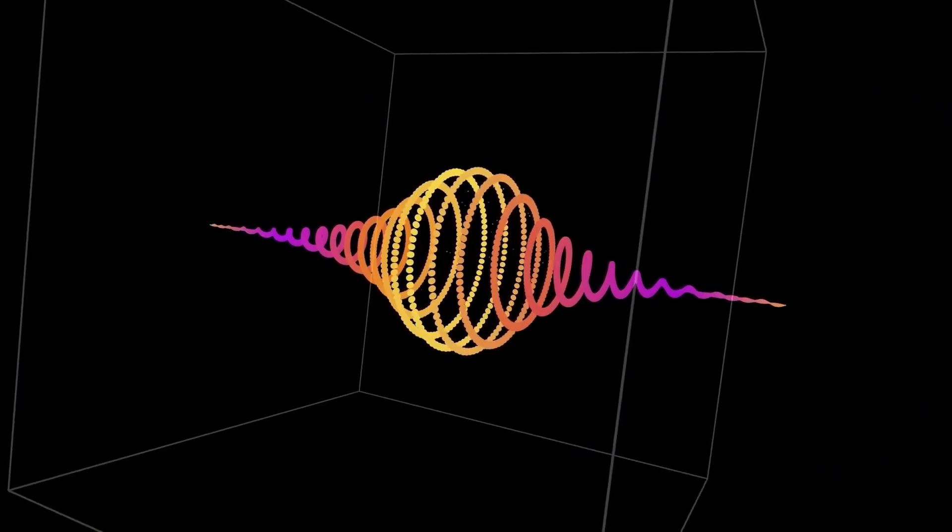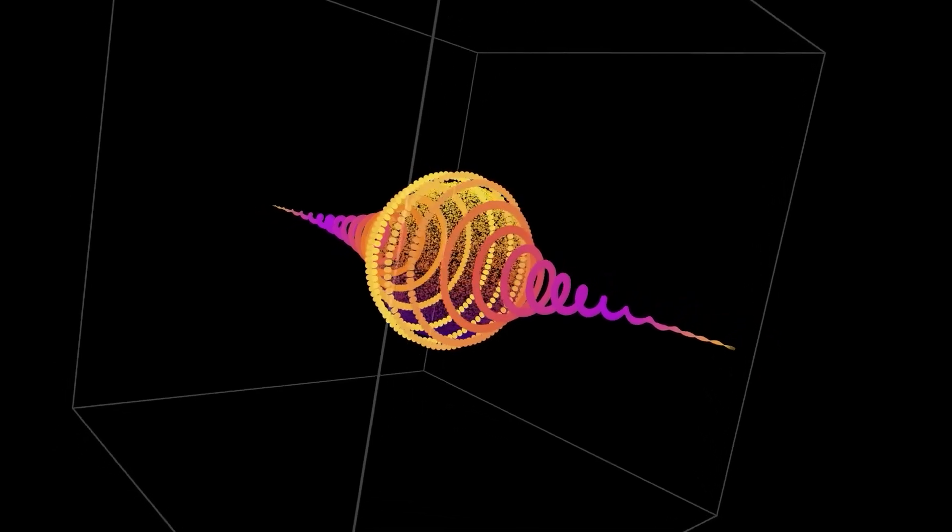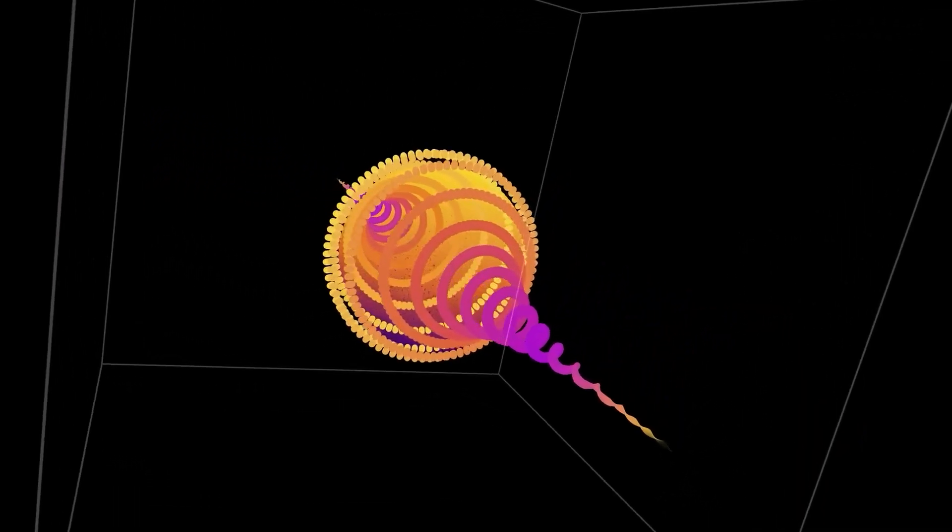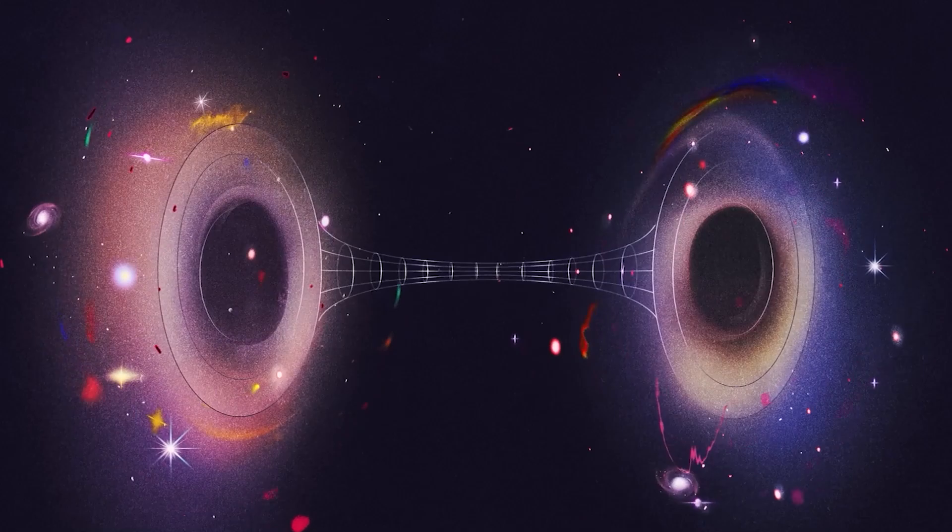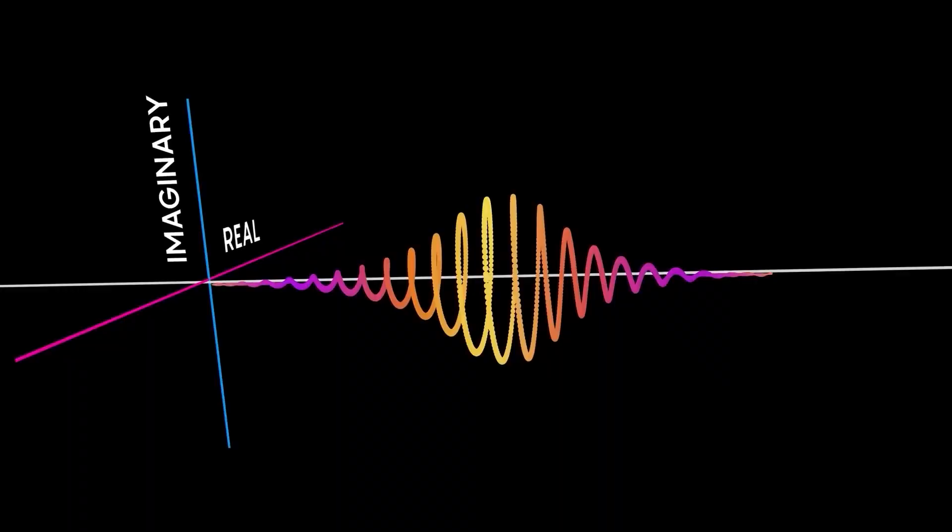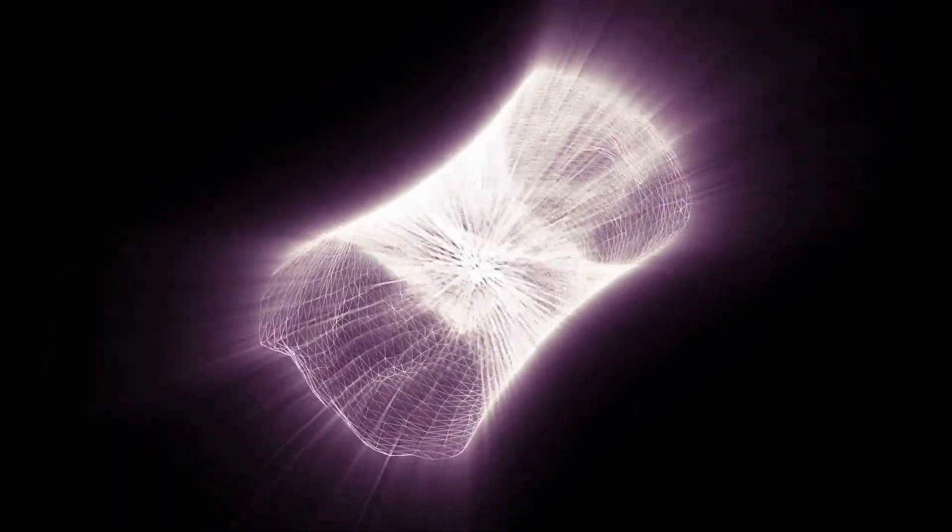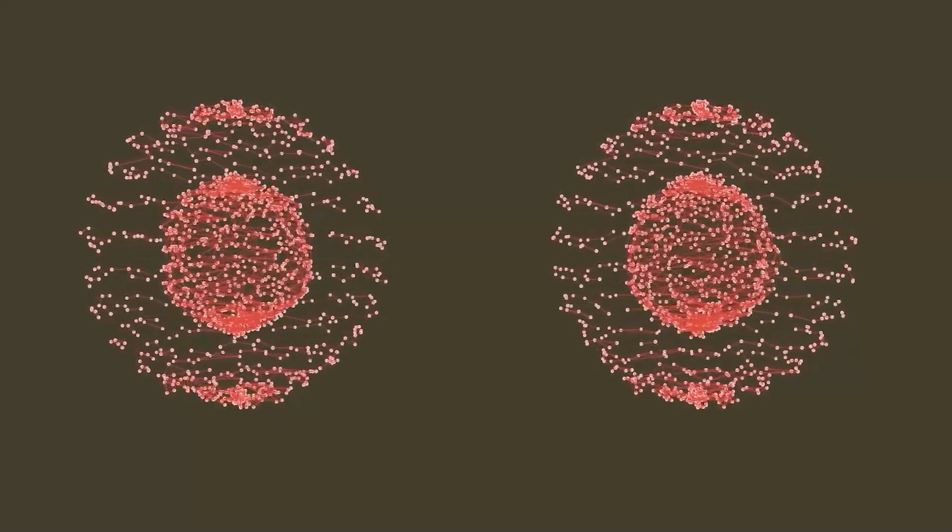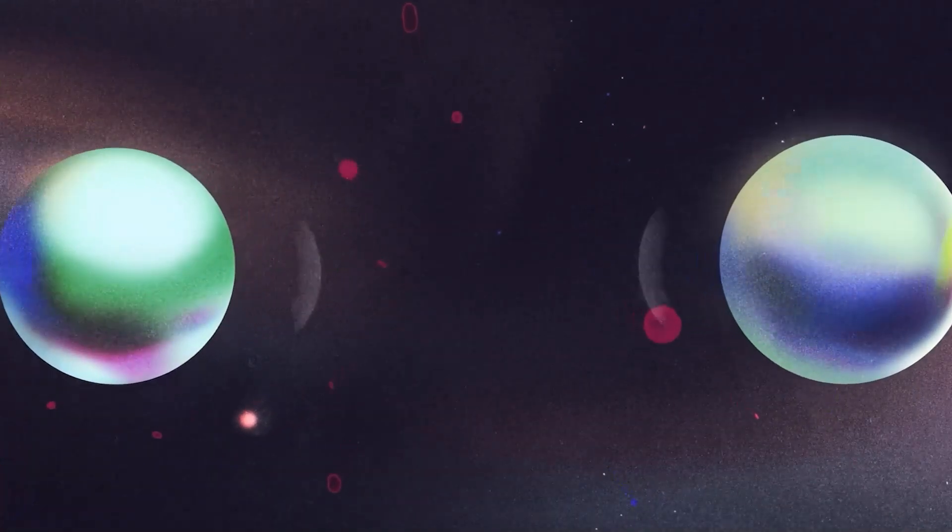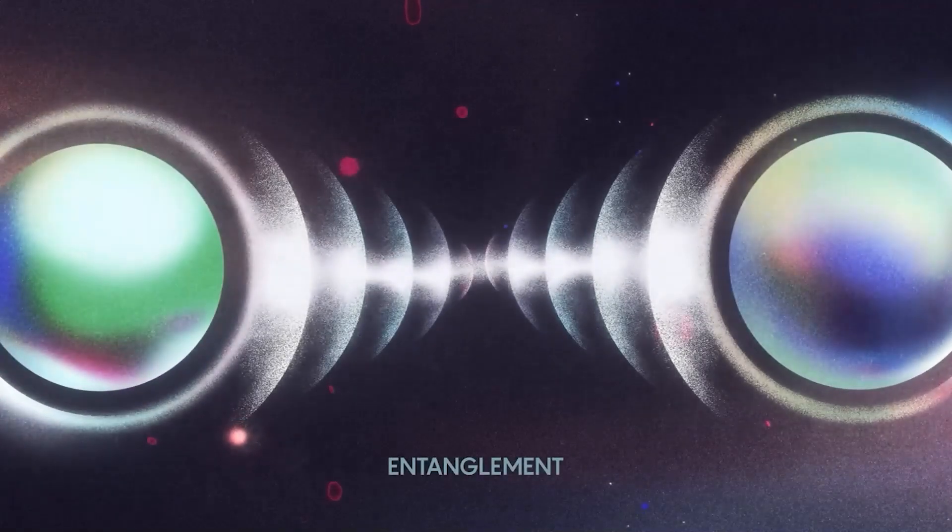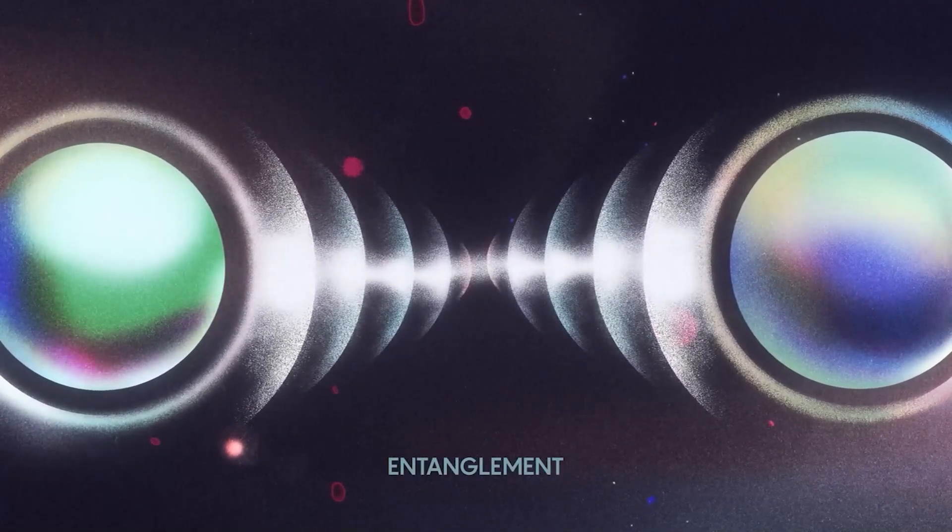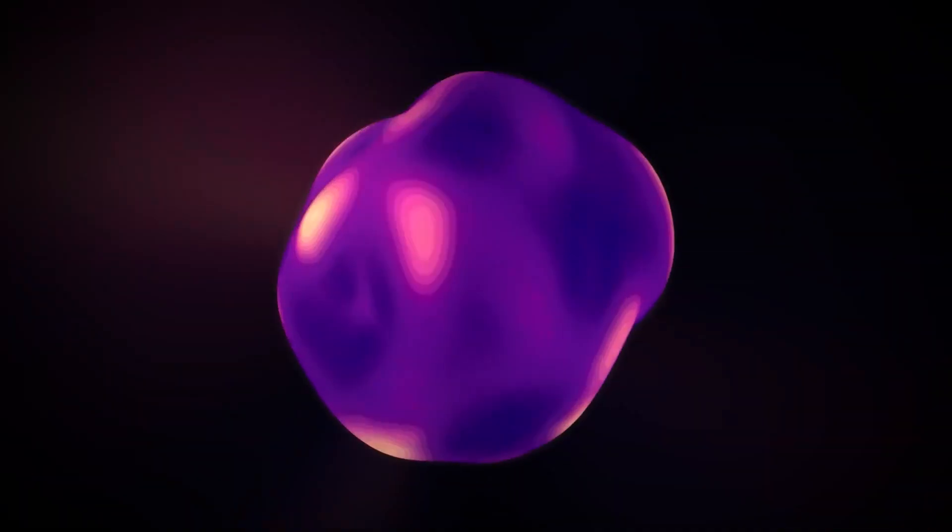Entanglement. In contrast to the autonomous functioning of classical bits, qubits within a quantum computer possess the ability to become entangled, resulting in the creation of a unified quantum state. To illustrate, consider two initially entangled qubits existing in different superposition states. Upon becoming entangled, the independent probabilities associated with each qubit are overridden, and a comprehensive probability distribution is computed for all potential states.